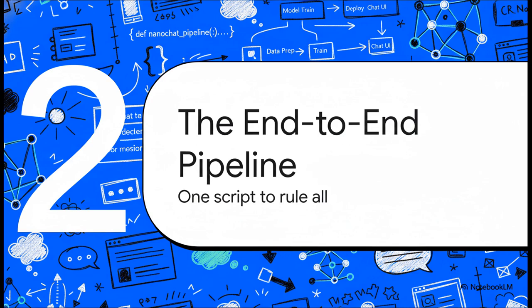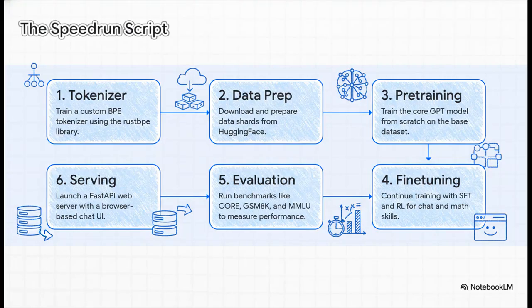So, how do you actually make it all happen? The entire process, from raw data all the way to a deployed model, is run by a single master script called speedrun.sh. You can think of it as the conductor for the entire orchestra. This one script takes you on the complete journey.